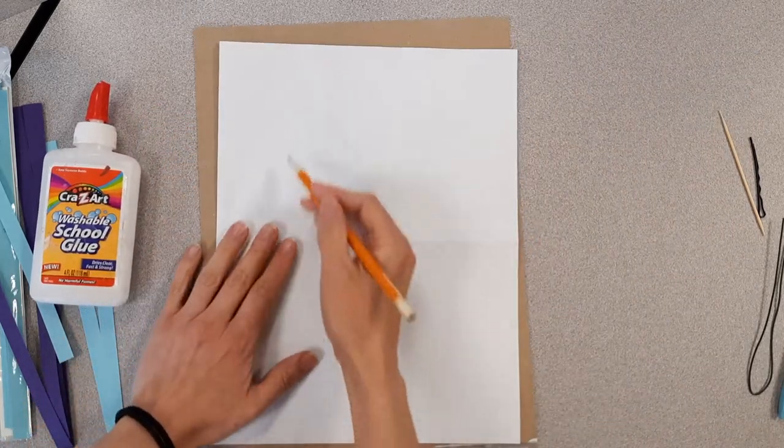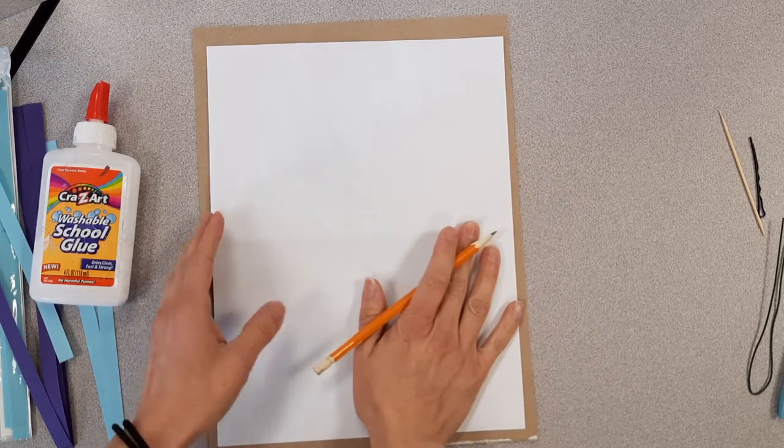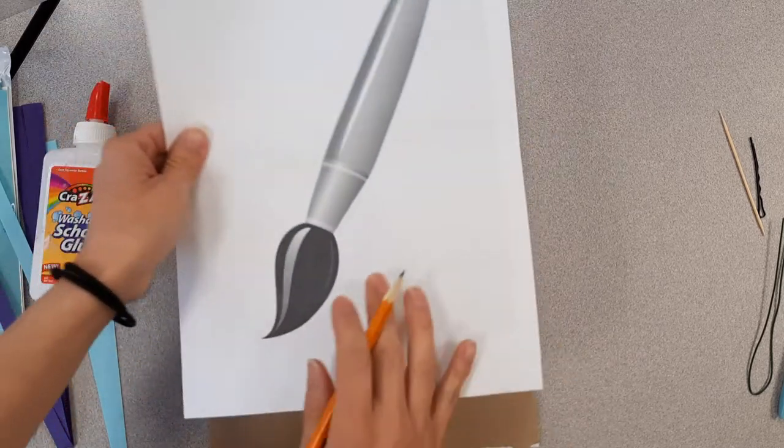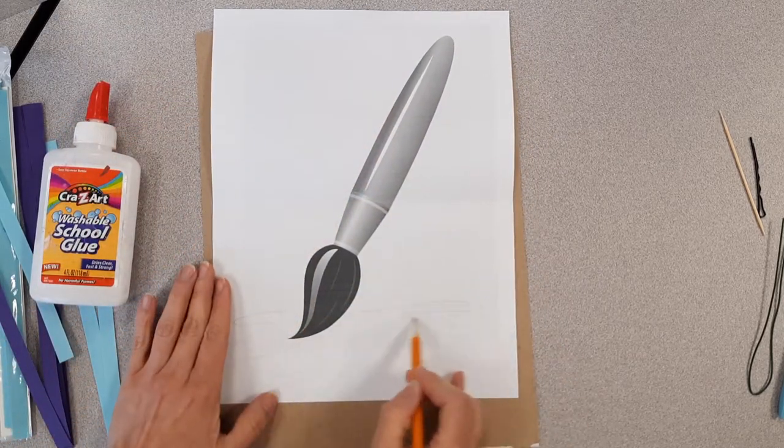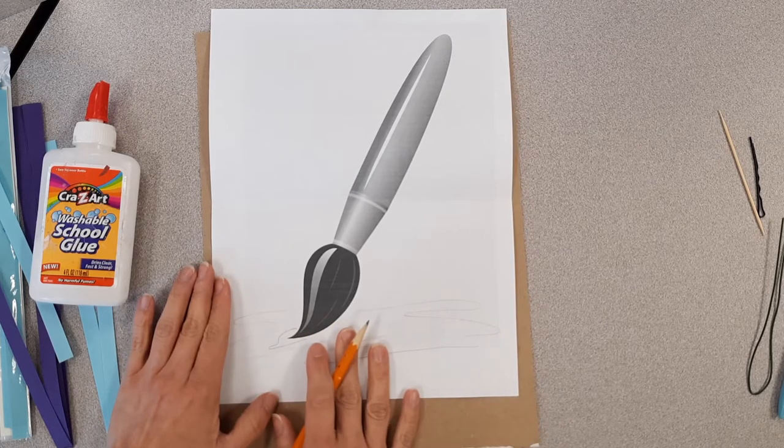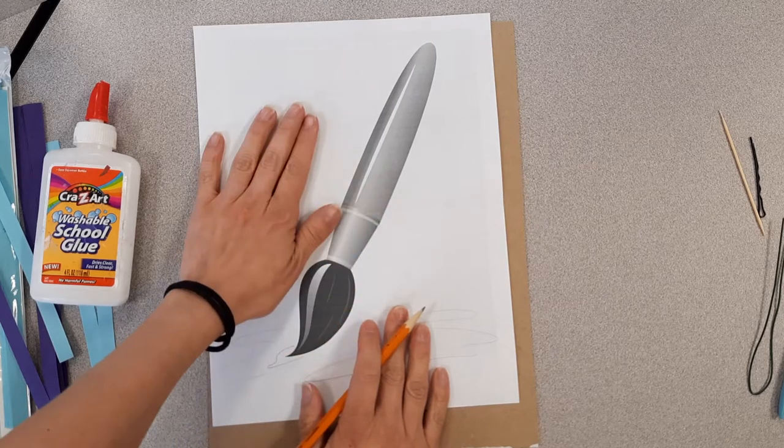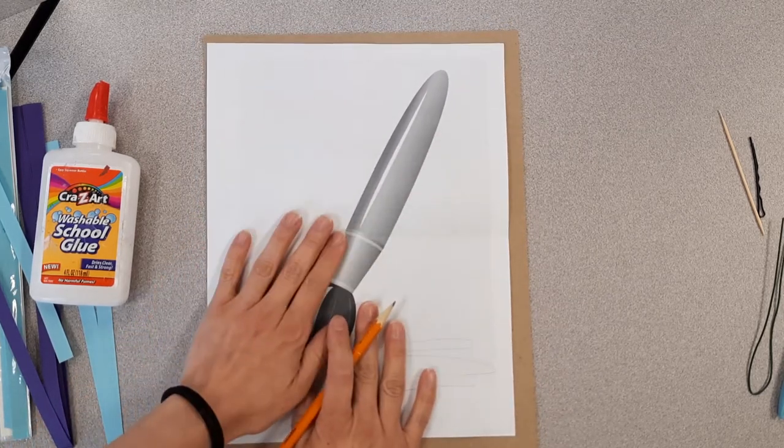The first thing is you have to draw your design. Draw your design as big and as perfect as you want—you can also print a design. I decided that I wanted to do a paintbrush and I'm gonna add colors of paint like it's coming out of the paintbrush. I wanted to show you how to transfer an image in case we haven't done that yet.